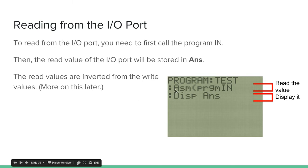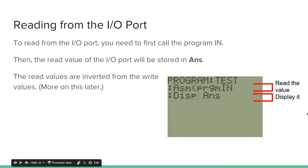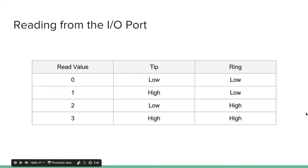So as you can see, I just say asm(prgmN) and then Disp Ans. When you call asm(prgmN), the value will be stored in Ans, so I can just display Ans and it will show the value.